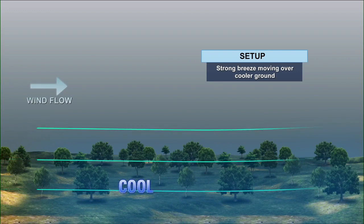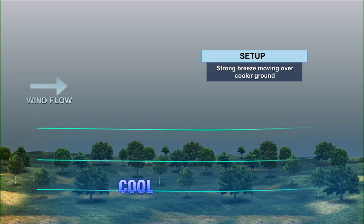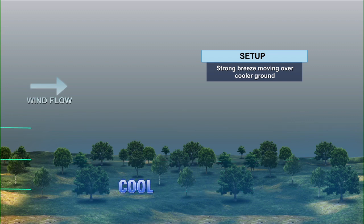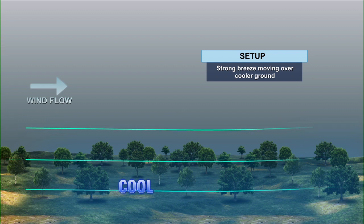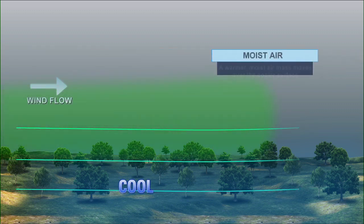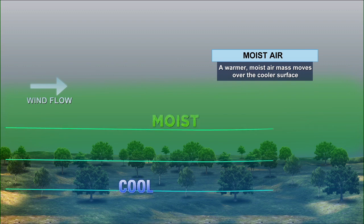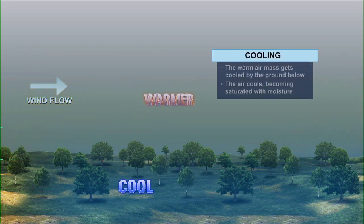Our last one is very similar — it's also called advection fog, but it's inland. The setup is a strong breeze moving over cooler ground. We're still talking about warm air, cooler air, and moisture. A warmer moist air mass moves over the cooler surface — very similar to the coastal advection fog.